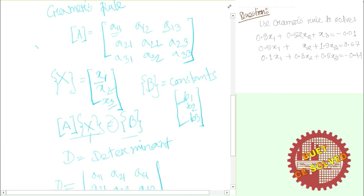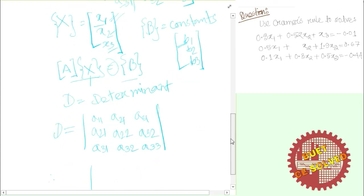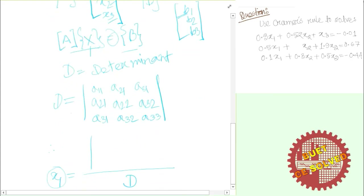To find x1, we take the coefficient matrix and replace the first column with the constant vector b1, b2, b3. We then compute the determinant of this modified matrix. This determinant divided by the determinant of A gives us x1.